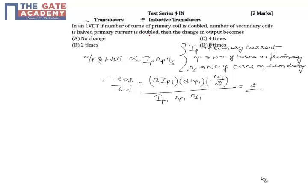We know that output of LVDT is directly proportional to the primary turns and the primary current, the number of primary turns and the number of secondary turns. In case of second LVDT we have double the number of turns and we have reduced it to half the number of secondary coils.